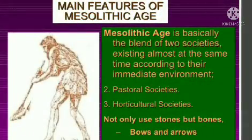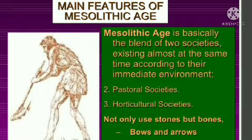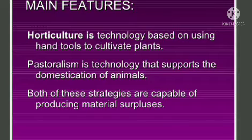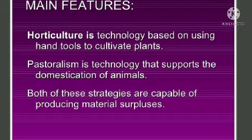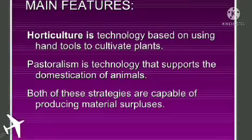The Mesolithic age is basically the blend of two societies existing almost at the same time according to their immediate environment — pastoral societies and horticultural societies — using not only stones but bones, bows, and arrows. Horticulture is a technology based on using hand tools to cultivate plants. Pastoralism is a technology that supports the domestication of animals. Both of these strategies are capable of producing material surpluses.